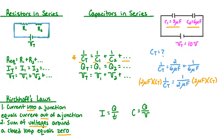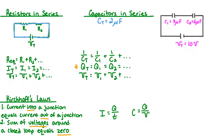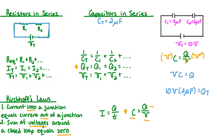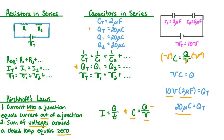To solve for total capacitance, we multiply both sides of the equation by 2 microfarads and total capacitance, leaving us with 2 microfarads equals the total capacitance. Next, we can find the total charge along with the charge stored on each of the capacitors, as we know they are all equal. Using the equation Q equals V times C, our total potential difference was 10 volts and total capacitance was 2 microfarads. When we multiply 10 volts by 2 microfarads, we get 20 microcoulombs. So the total charge, the charge stored on capacitor 1, and the charge stored on capacitor 2 are all equal to 20 microcoulombs.